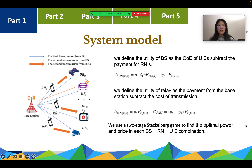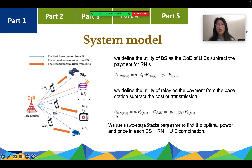We first define the utility of the base station and the relay devices, and then use a two-stage Stackelberg game to find the optimal power and price for each relay-user combination. As shown in this figure, there are 12 combinations in total, since each relay has four choices and there are three relays.